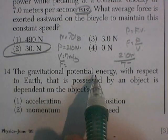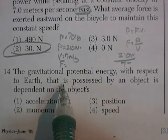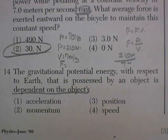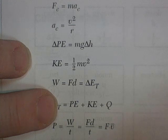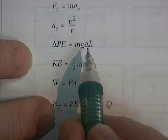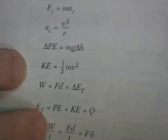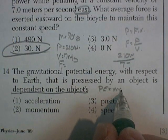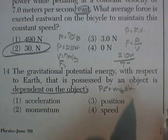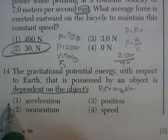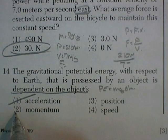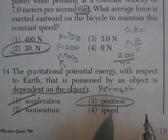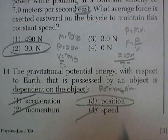Question 14. The gravitational potential energy with respect to Earth that is possessed by an object is dependent on the object's... The formula for potential energy is mass times acceleration due to gravity times a change in height. Let's see what our choices are. Potential energy, mg, delta H. Its acceleration? No. Its momentum? No. Its position? That would be its height. I would say that. And its speed? No.